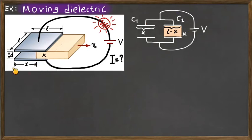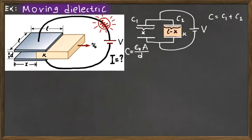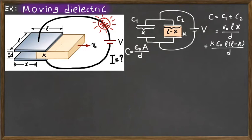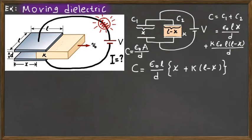At any instant of time where the dielectric is displaced by an amount x, we can express the equivalent capacitance of the system. The equivalent capacitance is found by adding C1 and C2. For a parallel plate capacitor, capacitance equals epsilon_0 times the surface area divided by d. For C1, the surface area is l times x; for C2, the surface area is l times (l minus x), with the dielectric constant kappa included. This is the equivalent capacitance expressed in terms of displacement x.